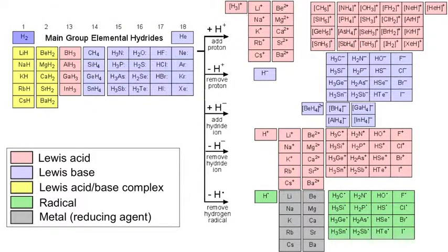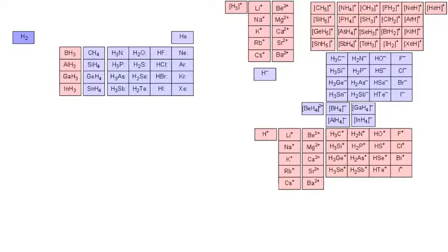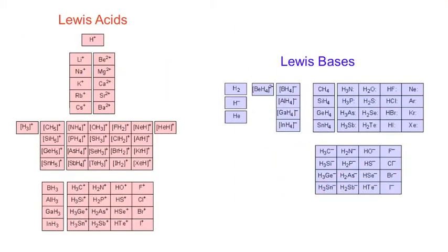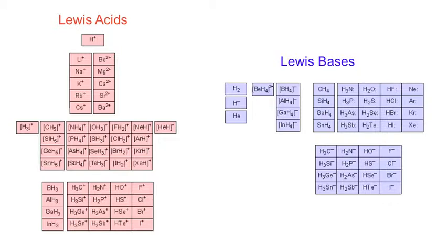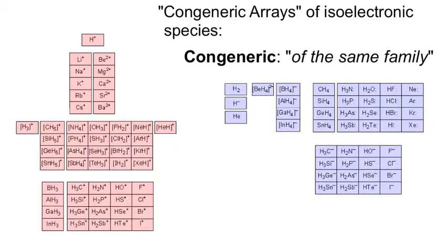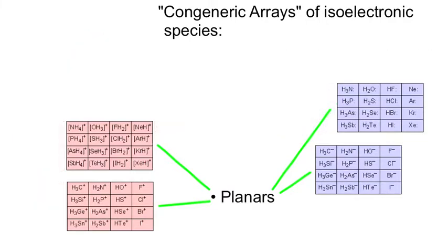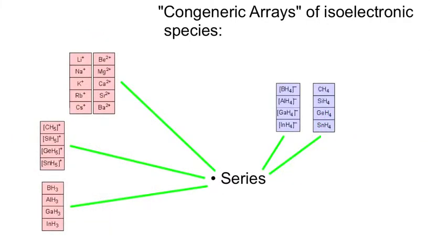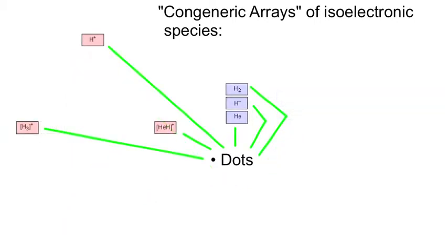This gives us quite a large set of species. We're going to look at these as arrays, focusing only on the Lewis acid and Lewis base species — all other information has been removed. Lewis acids are red, Lewis bases are blue. What we've generated is a series of congeneric arrays of isoelectronic species, where 'congeneric' means of the same family. We have congeneric planars (two-dimensional arrays), congeneric series (linear arrays), and congeneric dots — species without any congeneric cousins; they're lonely species.